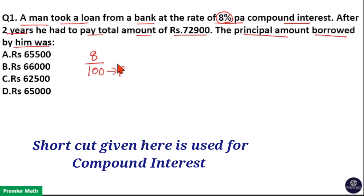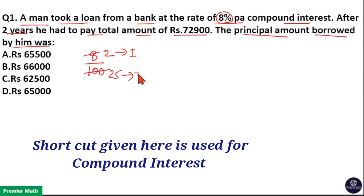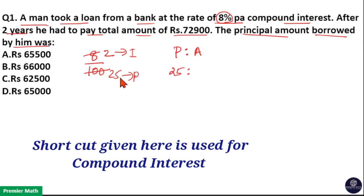Now I will convert this 8 by 100: 4 goes 2 times in 8, and 4 goes 25 times in 100. So 2 parts is the interest and 25 parts is the principal. Now if you take the ratio between principal and amount, principal is 25 parts, then amount is principal plus interest, that is 25 plus 2, which equals 27.